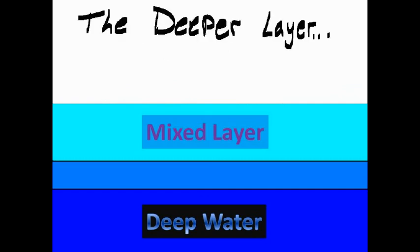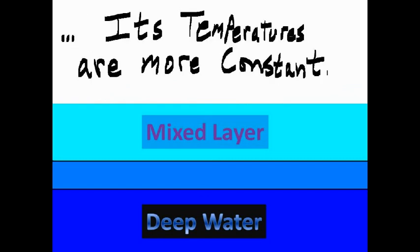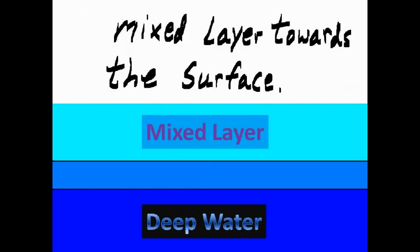Now, the deeper layer, called deep water, its temperatures are more constant. They are not so variable as the mixed layer towards the surface.